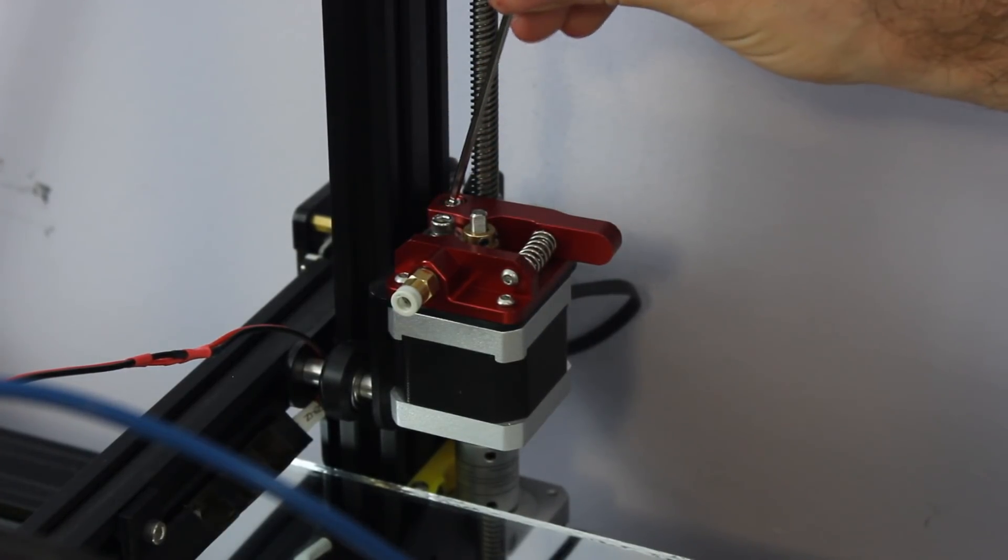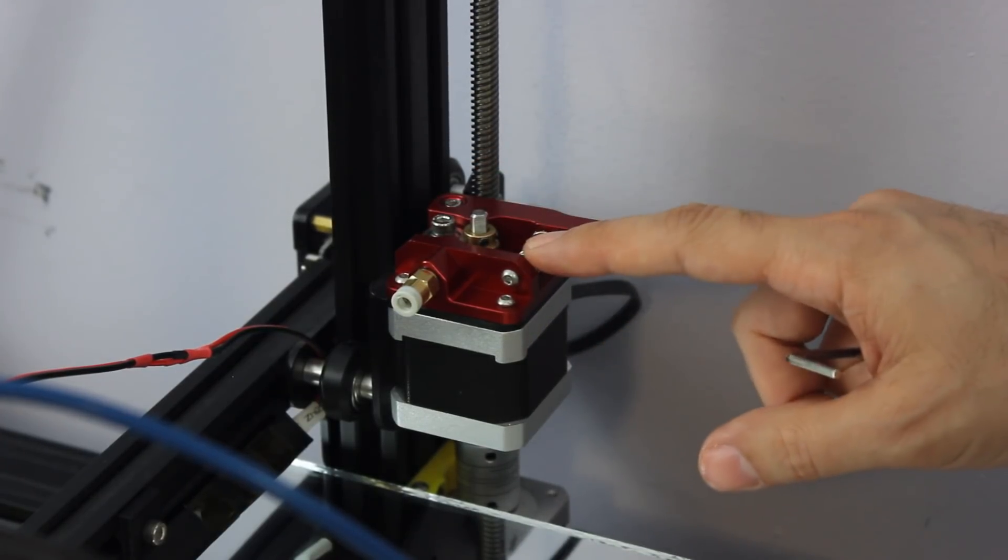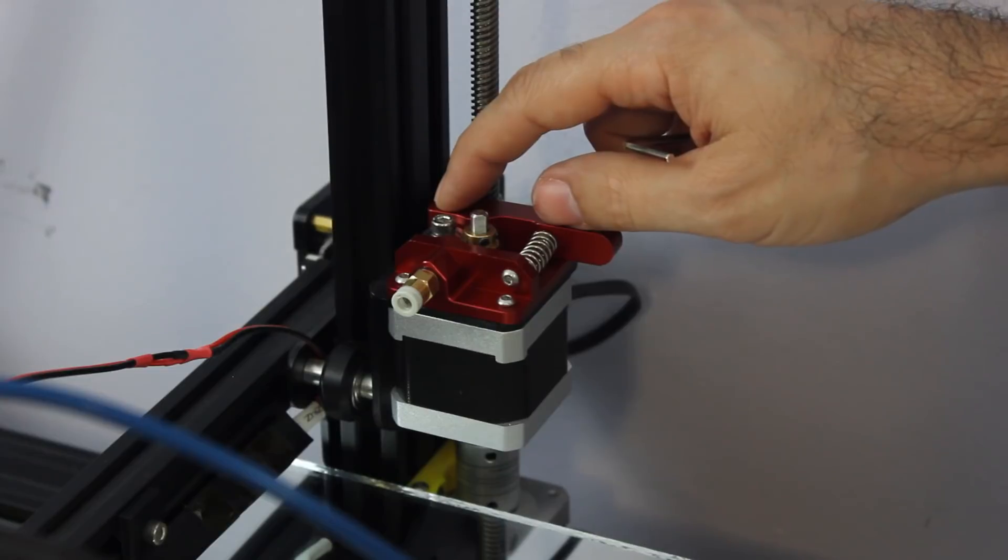Every time I've had issues it's actually been this being loose. If you find that this isn't the issue, you can add washers to this, but keep in mind it's going to put a lot more pressure on this screw.